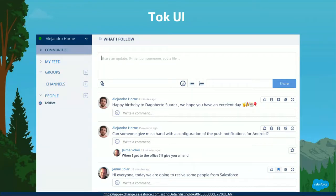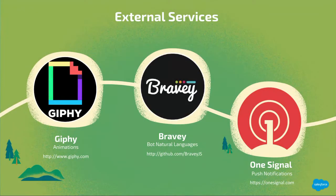In terms of third-party external services, we're going to be covering Giphy.com for animated GIFs, Bravy for natural language processing, and OneSignal for push notification systems.